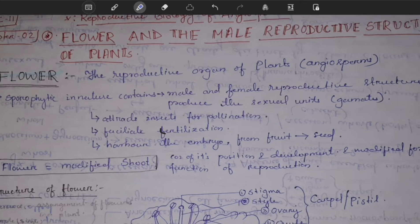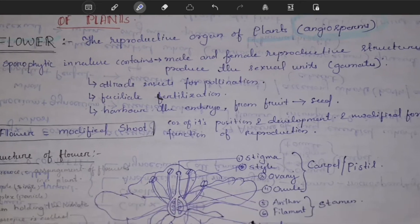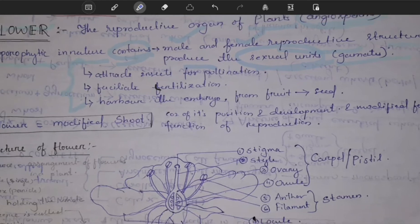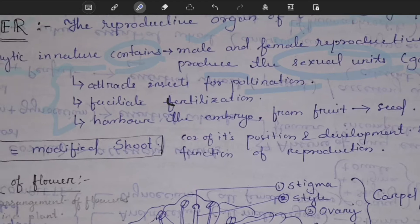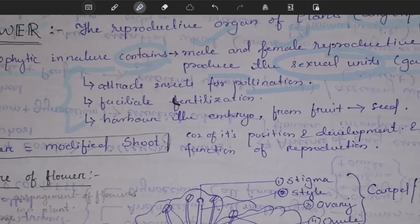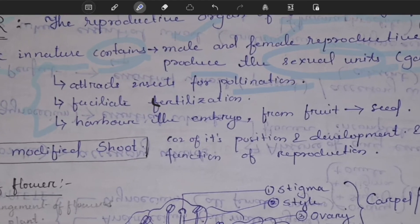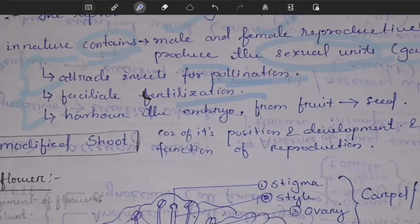The flower is the reproductive organ of plants, especially angiosperms. It is sporophytic in nature, containing both male and female reproductive structures which produce the sexual units known as gametes. Its extra functions include attracting insects for pollination through vibrant and bright colors, and it facilitates fertilization by providing a place for it to occur.